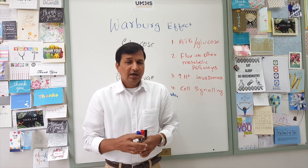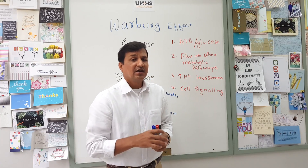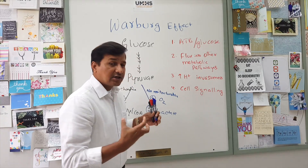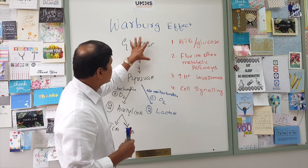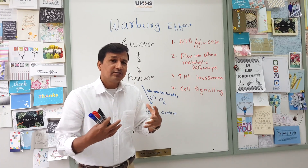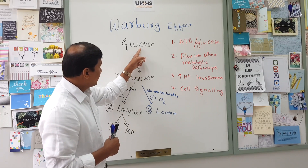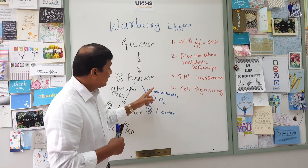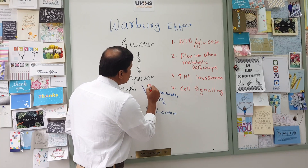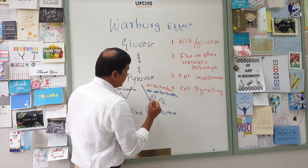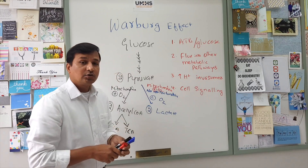Now let's see what the Warburg effect is. In tumor cells, a special property has been observed in relation to glycolysis. Warburg observed that tumor cells consume too much glucose — highly proliferating tumor cells consume far more glucose — and they divert those two pyruvates from each glucose molecule into two lactates even in the presence of mitochondria and sufficient oxygen. That contrasting feature is the key characteristic of tumor cells.